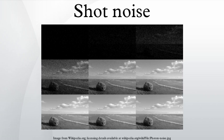For instance, particle simulations may produce a certain amount of noise, where due to the small number of particles simulated, the simulation exhibits undue statistical fluctuations which don't reflect the real-world system. The magnitude of shot noise increases according to the square root of the expected number of events, such as the electric current or intensity of light. But since the strength of the signal itself increases more rapidly, the relative proportion of shot noise decreases and the signal-to-noise ratio increases.